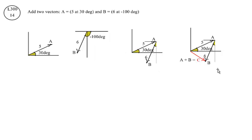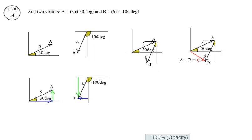That's our answer, C. How long is it, and at what angle is it? One way to answer the question is to resolve the A vector into rectangular components, resolve the B vector into rectangular components, and then add the rectangular components.